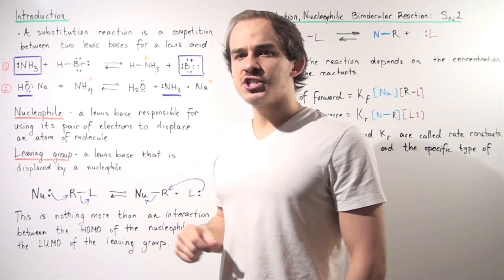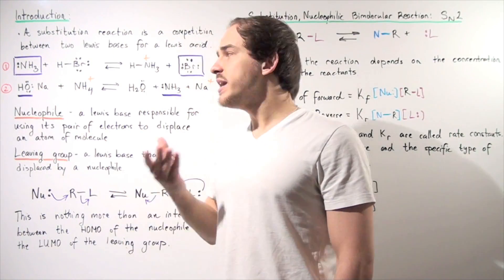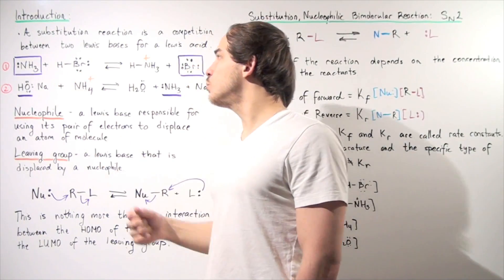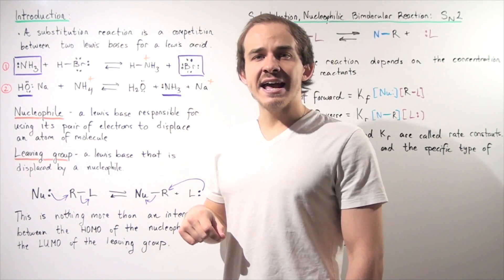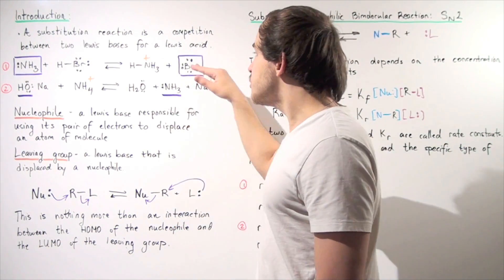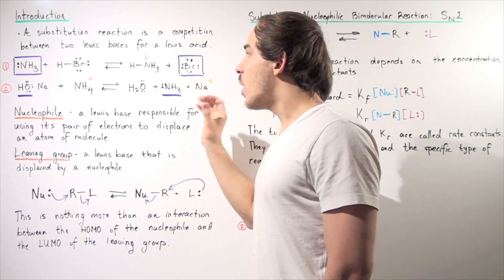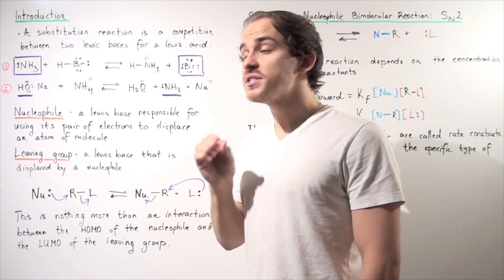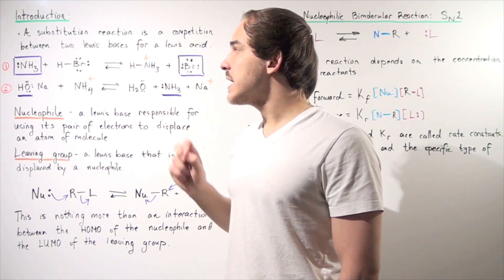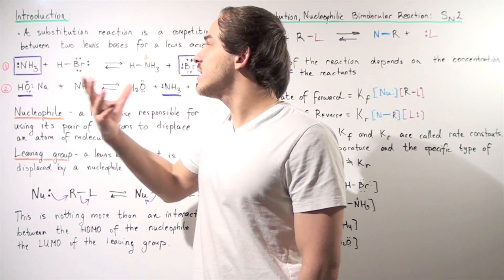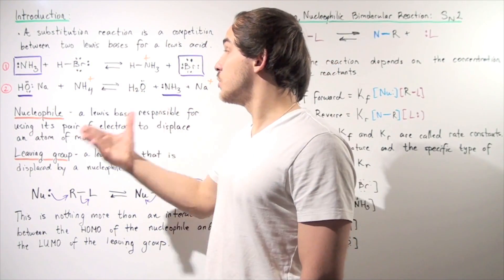So in reaction one, on the reactant side, we have the Lewis base, the amine, reacting with our Lewis acid to produce our two different products — our ammonium and our bromine anion. So which ones are the Lewis bases and which one is the Lewis acid? On the reactant side, our Lewis base is the amine. It contains the lone pair of electrons that can be used to take away this H atom from our hydrobromic acid.